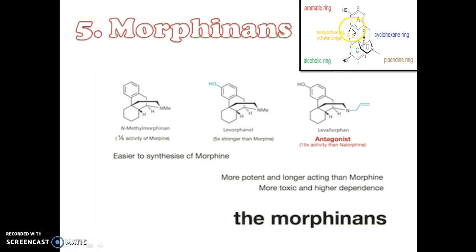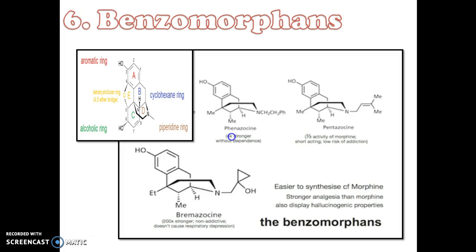Removal of the 4,5-epoxide bridge in the morphine structure results in compounds referred to as morphinans. An example of this group is levorphanol. It is about 5 times stronger than morphine as an analgesic in humans. Levorphanol's increased activity results from increased affinity for mu opioid receptors and its greater lipophilicity, which allows higher peak concentrations to reach the brain.